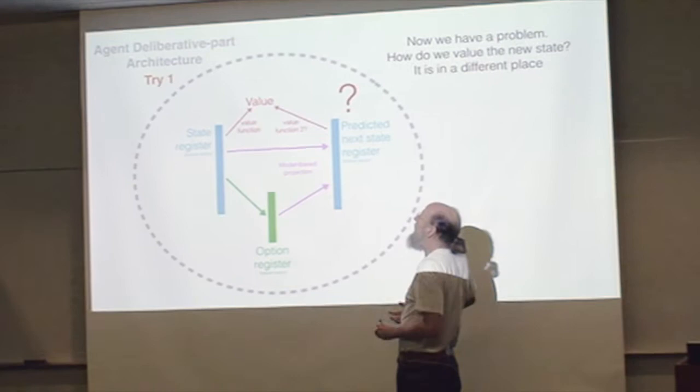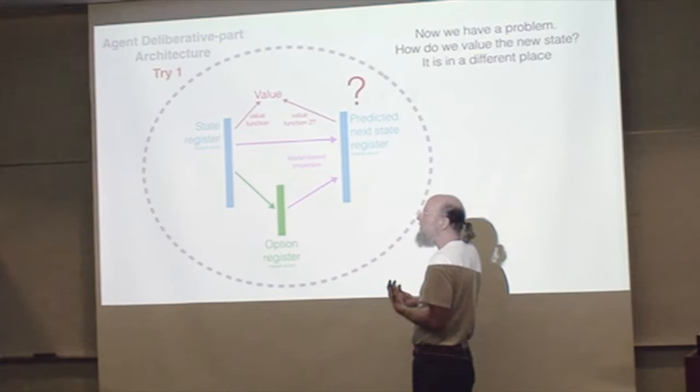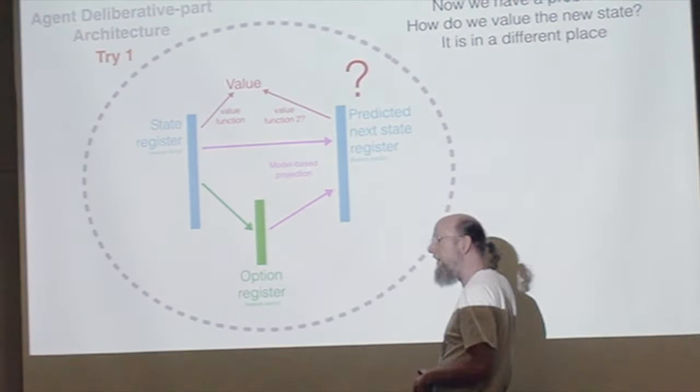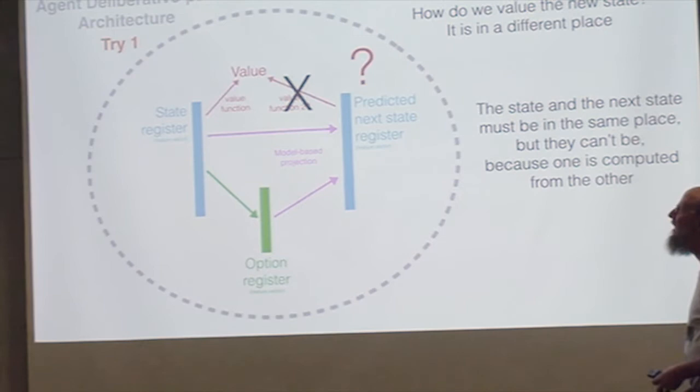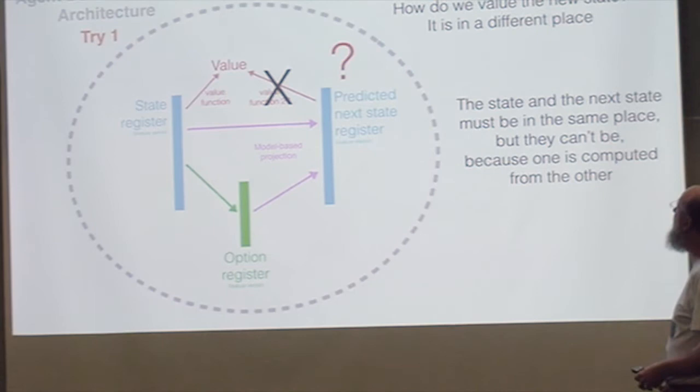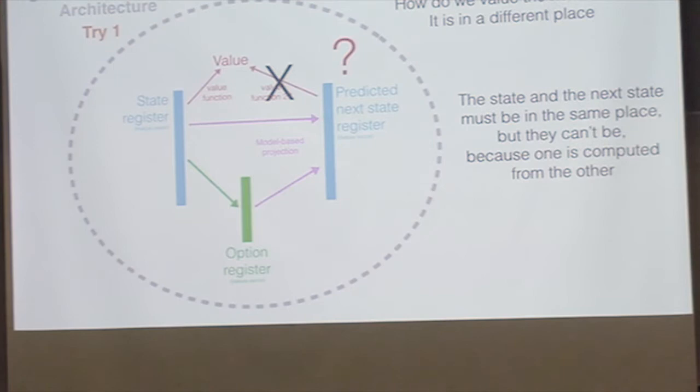You might imagine trying to make the value function compute the value of the second set of wires about the new place. But that's going to be crazy because you're going to have to learn the weights of the value function twice. And then they won't be aligned with each other. You need to apply the same value function to these two states. And yet, they're in different places. That's the problem.